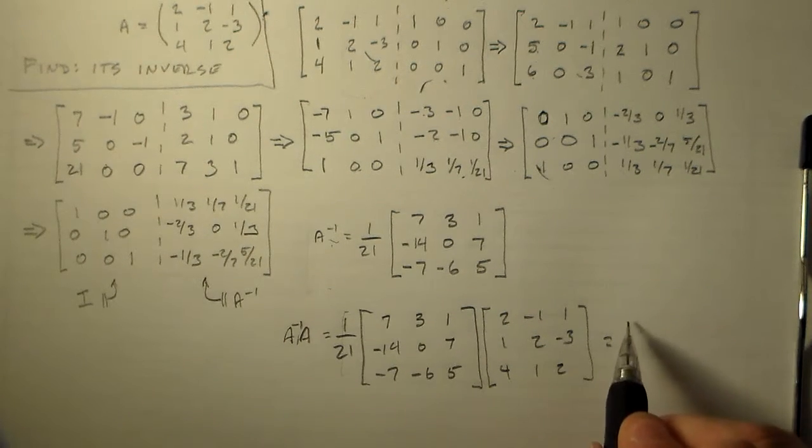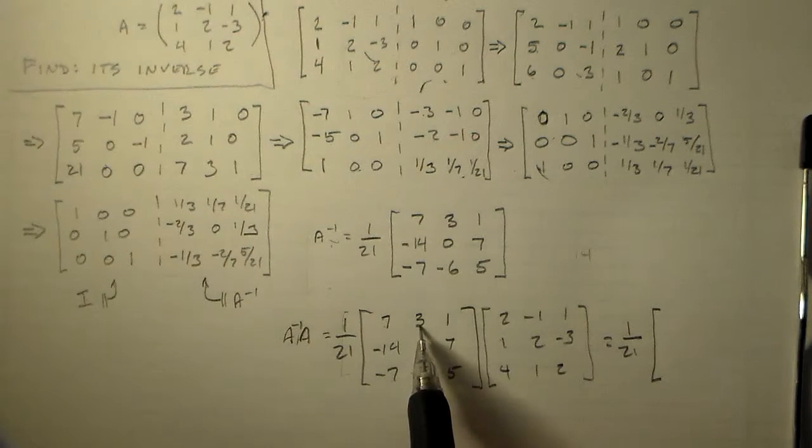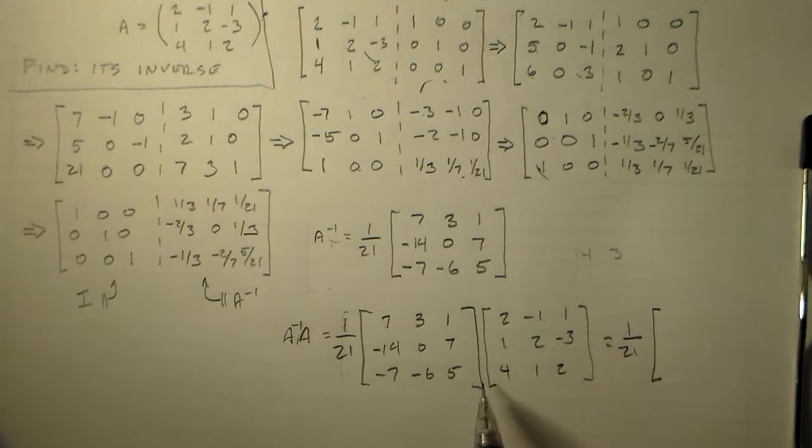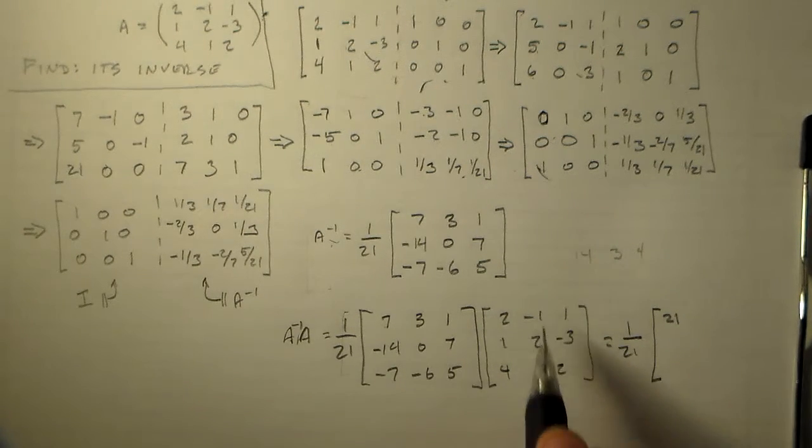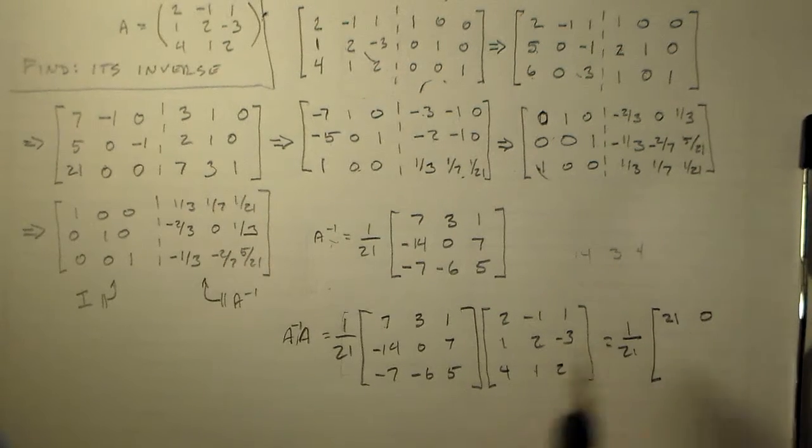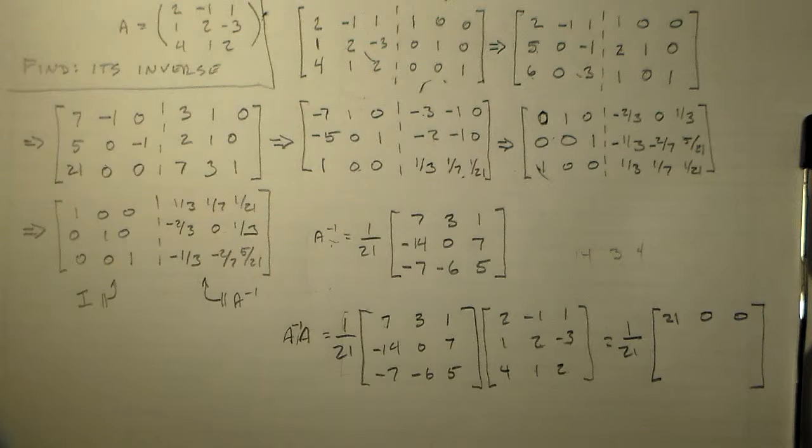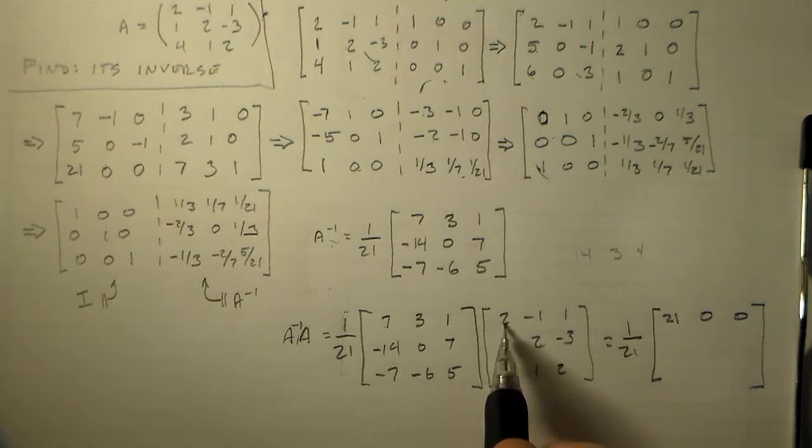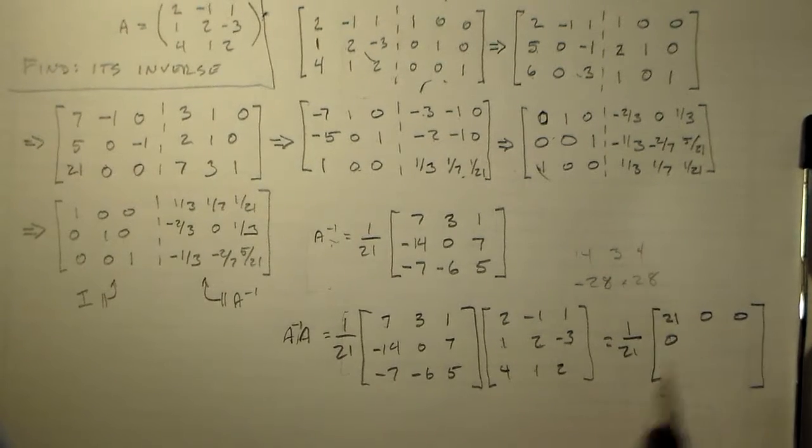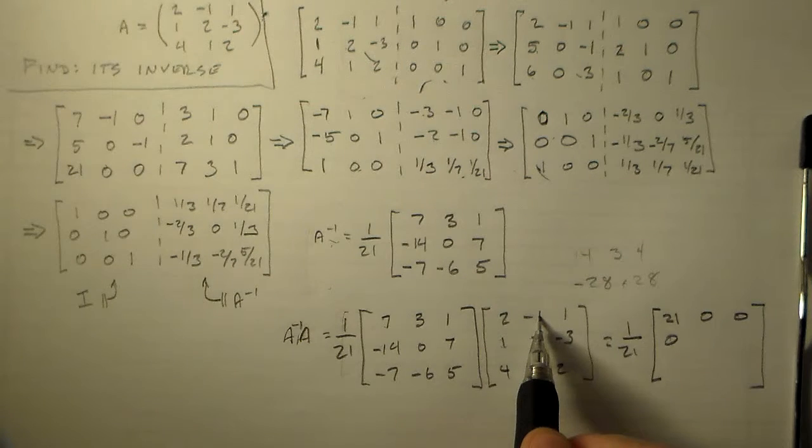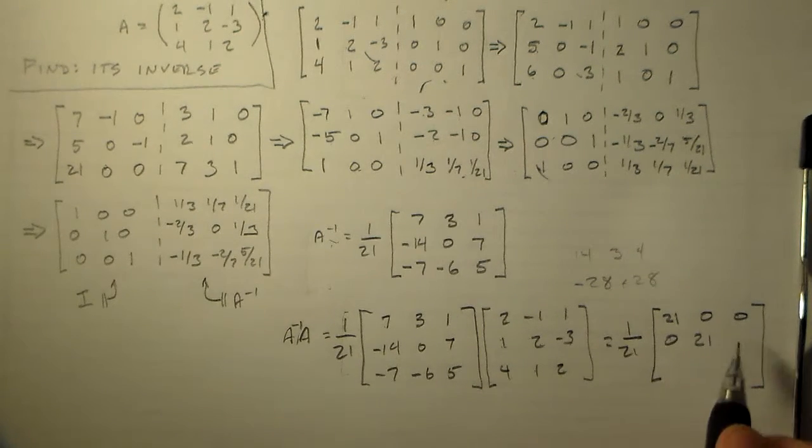So we have 7 times 2 which is 14, 3 times 1 which is 3, and 1 times 4 which is 4, add those all up you get 21. That's going to give us 1, we're okay with that. So we have minus 7 plus 6 plus 1, that's 0. 7 minus 9 plus 2, that's 0. Seems like we're doing pretty good. So then we have minus 14, so we have minus 28 times 0 plus 28 which is 0. We like that. Then we have minus 14, which is 14, 0, 7, so that's 21. Then we have minus 14 plus 14 which is 0, so we're good with that.